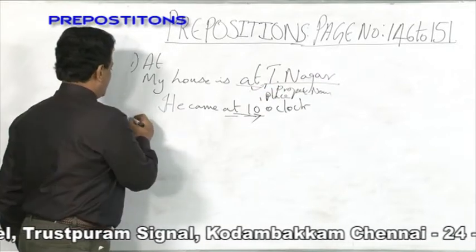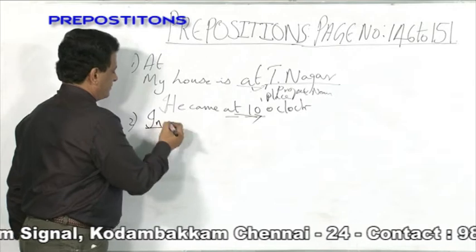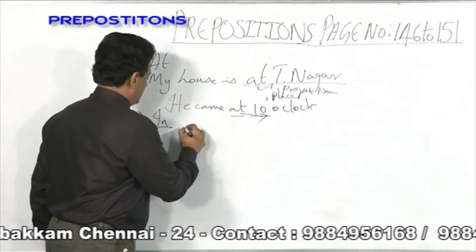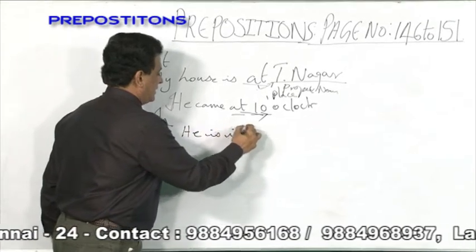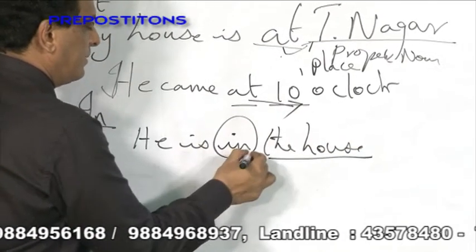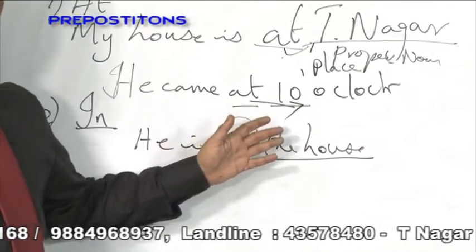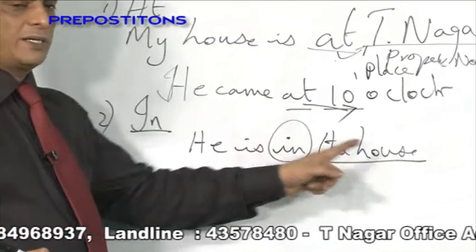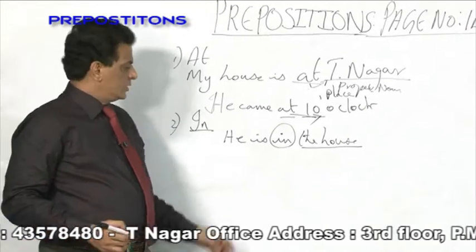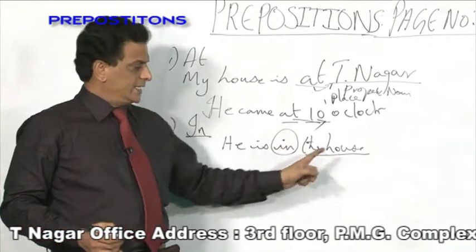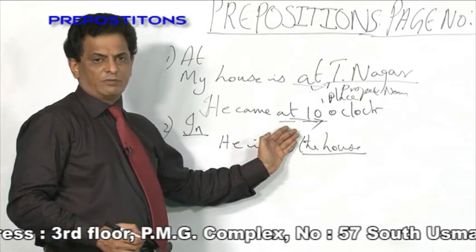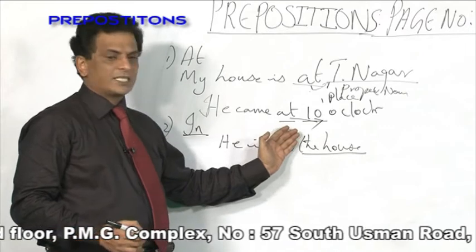For example, the second preposition you can take is 'in'. He is in the house. House is a noun. 'He is house' does not give any meaning. Only if you add 'in' it gives a meaning — he is in the house. The house is a noun; 'in' comes before the noun. Without 'in', it does not give any meaning. You have to use 'in' in front of the noun. So it is called a preposition. Imagine without a preposition — can you form a sentence? It is very difficult.